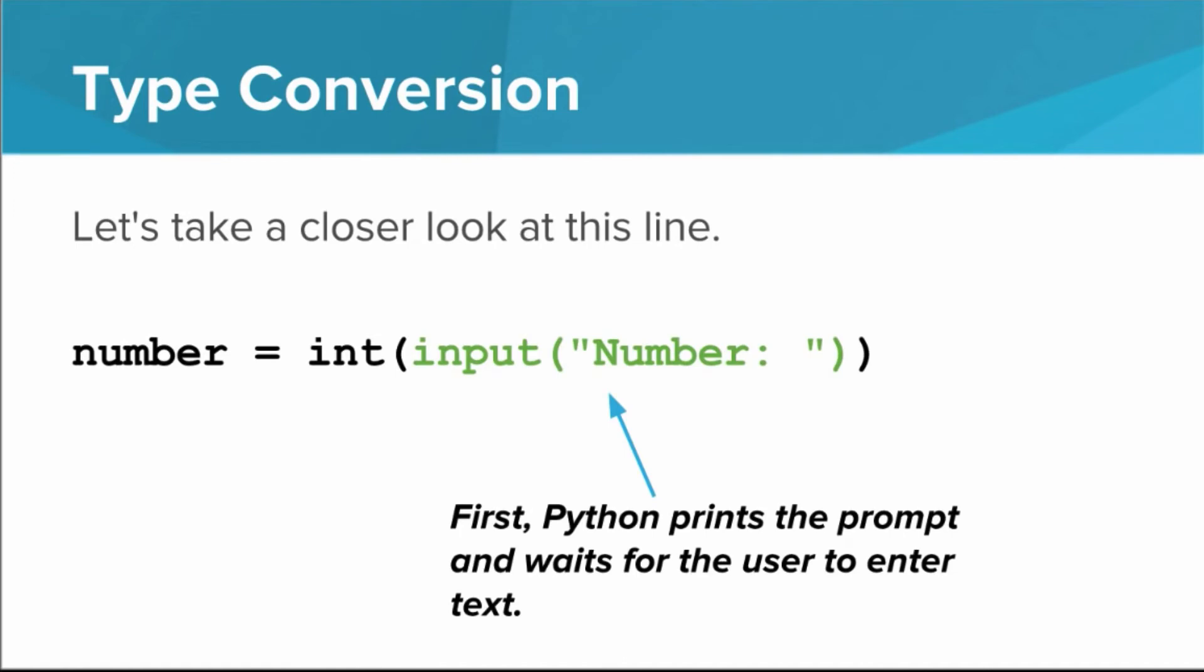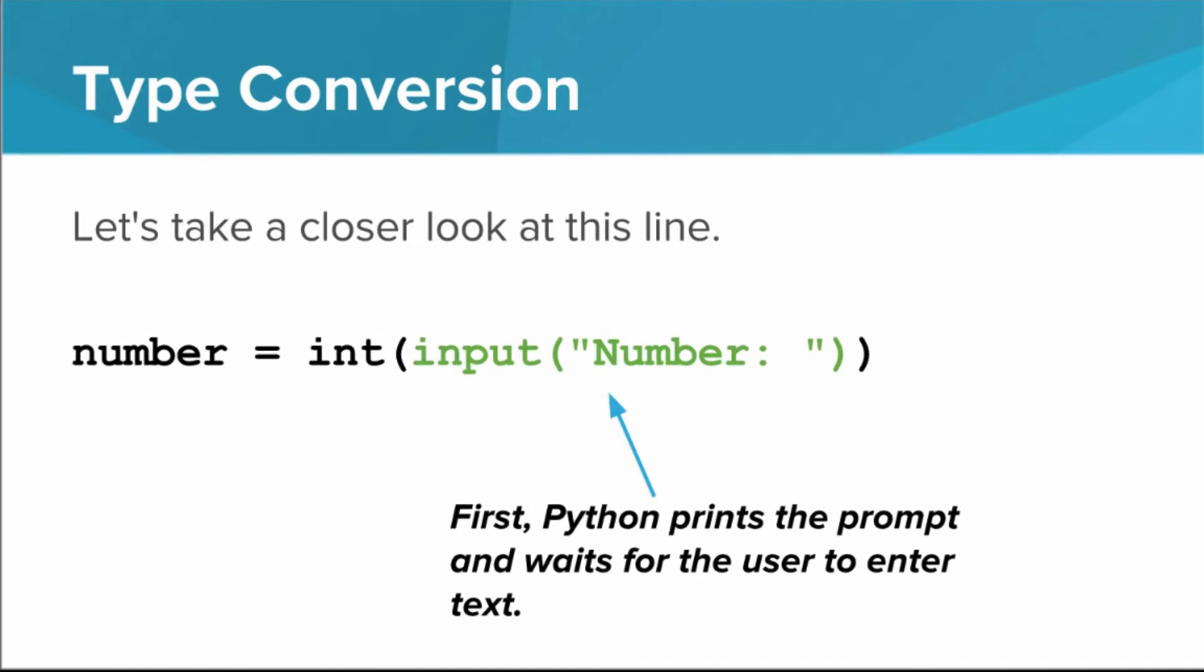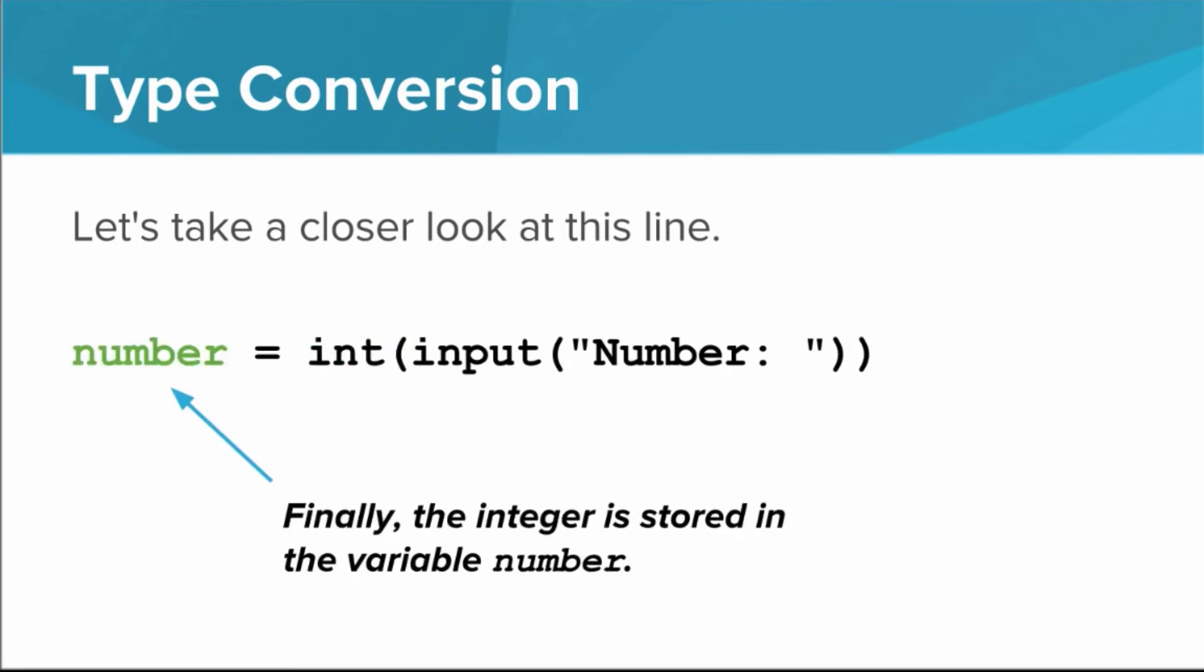First, the input function runs as it normally would. Python prints a prompt and pauses while the user enters text. Then whatever the user types is given to the int function, which converts it from a string into an integer. Finally, that integer is stored in the variable called number.